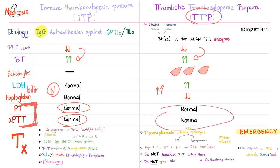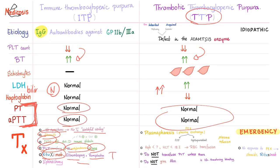How do we manage ITP? No symptoms, no treatment. You can give steroids, IVIG, platelet transfusion, IV steroids, and IVIG. Rituximab, eltrombopag, and romiplostim — these are platelet boosters, agonists to the TPO receptor, or TPO-RA. Splenectomy is last resort because the spleen is a major immune organ. If you decide to remove the spleen, don't forget to vaccinate and give antibiotics.